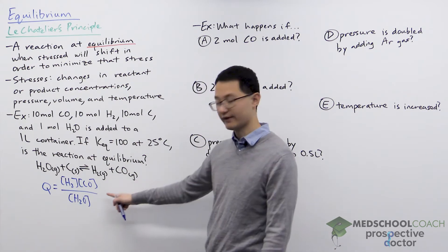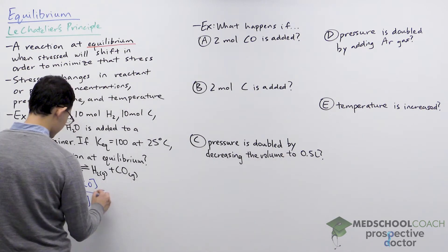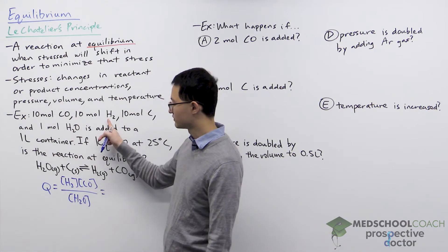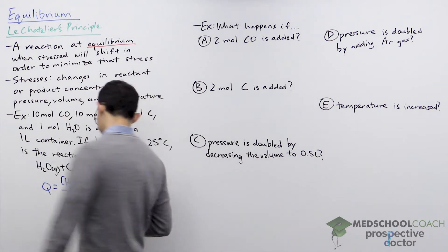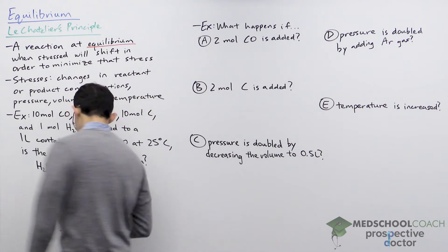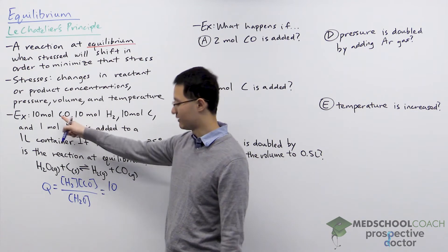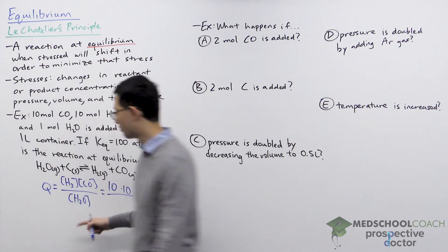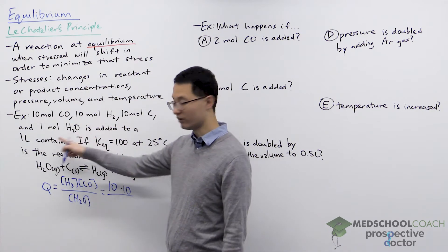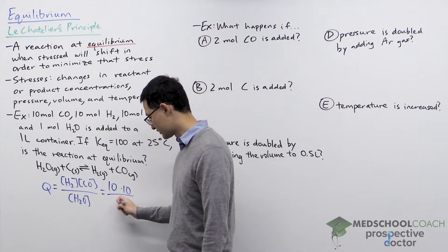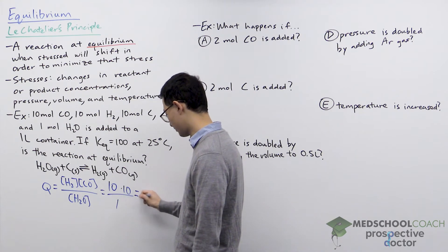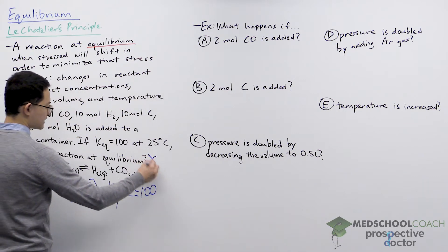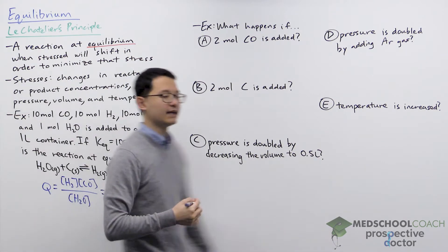To calculate the value of Q, we plug in the concentrations. For hydrogen, we have 10 moles in a 1-liter container, so the concentration is 10 M. For carbon monoxide, we also have 10 moles in 1 liter, so that's 10 M. For water, we have 1 mole in 1 liter, giving us 1 M. So 10 times 10 over 1 gives us Q = 100. Yes, our reaction is at equilibrium.